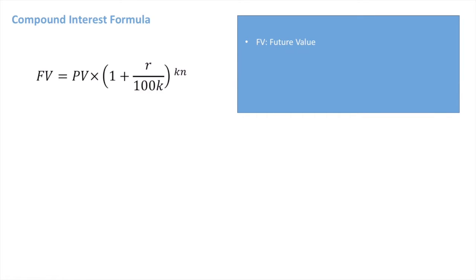FV stands for future value, so that's how much our investment will be worth after we've invested the money. PV stands for present value, so that's how much money we have to invest to begin with.